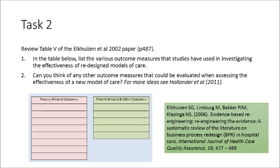For task two, I'd like you to review table five of the Alkheisen 2002 paper and in the table below list the various outcome measures that studies have used in investigating the effectiveness of redesigned models of care. Secondly, can you think of any other outcome measures that could be evaluated when assessing the effectiveness of a new model of care? For more ideas, have a look at the Hollander article which you have already read before.